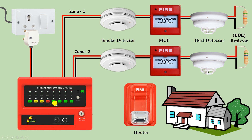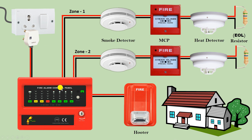In the fire control panel there are also two terminals for hooter connection. Connect wires from those terminals to the hooter. At the back of the hooter there are two terminals — connect positive and negative power supply there. If you have more hooters, connect them in parallel. After doing all these connections, if your house catches fire, the fire control panel will generate an alarm and you will be able to know there is a fire.